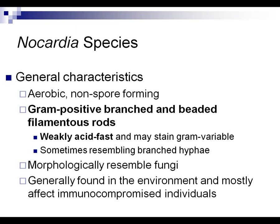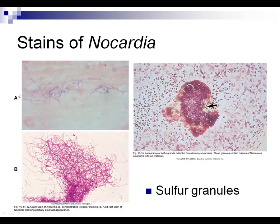Nocardia is a non-spore forming branching gram positive rod. It is filamentous with very long branches. It may not stain uniformly with gram stain, appearing beaded — you might confuse it with long chains of cocci. Anytime you have what you think are long branching beaded filamentous rods, perform an acid fast stain. If it's weakly acid fast positive, that's a good sign you're dealing with Nocardia.